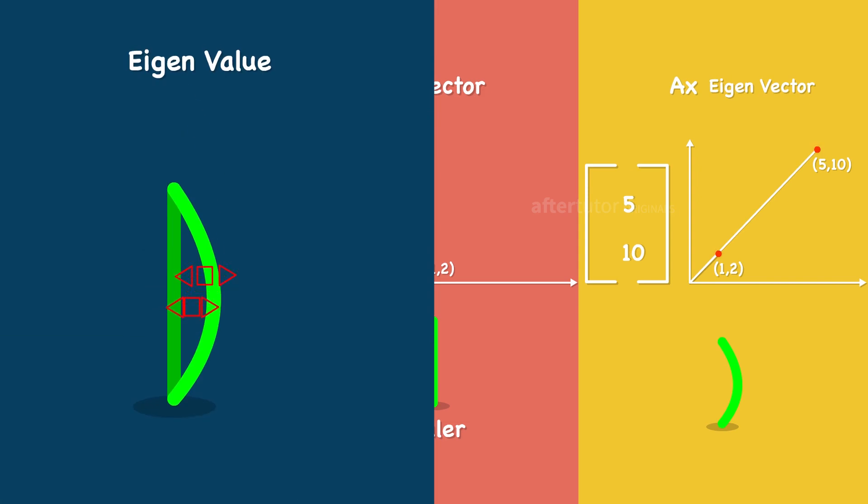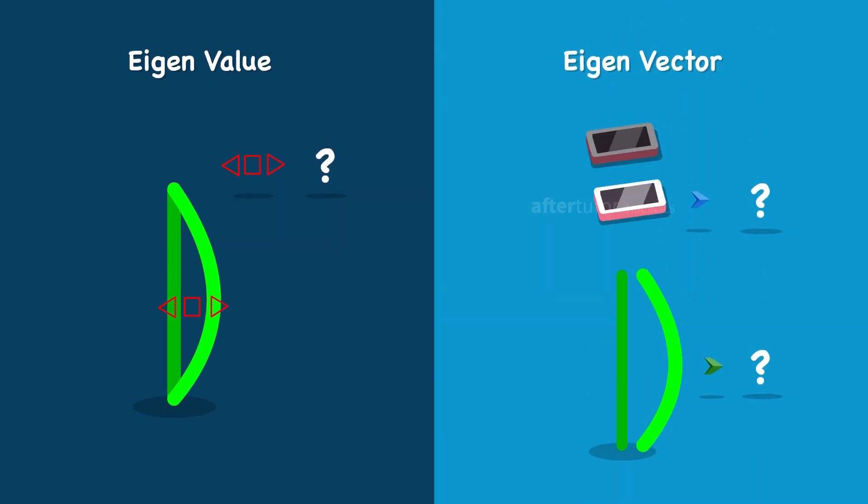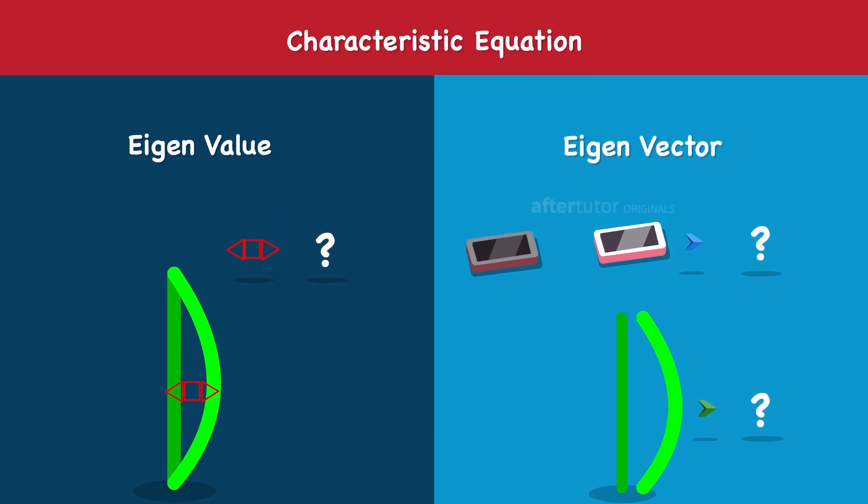Correspondingly, to find out the magnitude as well as the amount of change that happened to the ruler with the support of additional load added, characteristic equation is used.